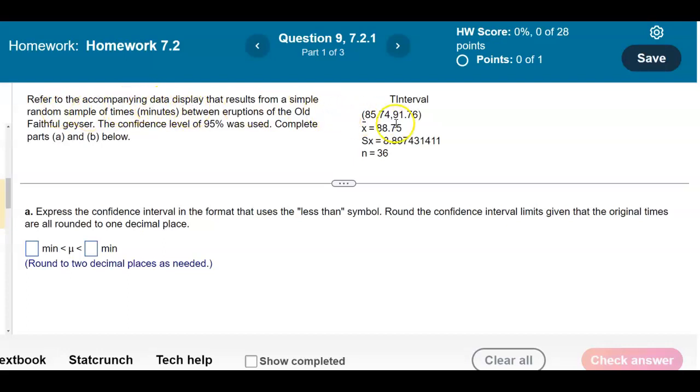Refer to the accompanying data display that results from a simple random sample of times in minutes between eruptions of the Old Faithful geyser. The confidence level of 95% was used. Complete parts A and B below.